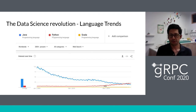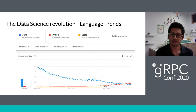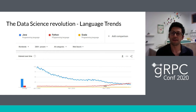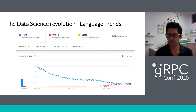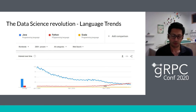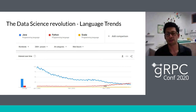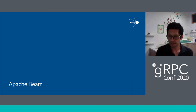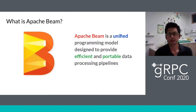Apache Beam is an open-source project in the Apache Software Foundation, donated by Google. The idea is to have a unified programming model — an SDK — that we can use to create efficient and portable data processing pipelines. We use the Beam APIs with the SDK and can run this in every supported system we want.